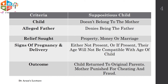The column on the left is regarding the criteria and the features of supposititious child on the right. First, the child does not belong to the mother. Regarding the alleged father, he denies the allegations. Third, the relief sought is where the child is used to claim property, money, or an illegal marriage with the alleged father. The signs of pregnancy and delivery are either not present, or if present, their age will not be compatible with the age of the child. When the allegations have been disproved, the child is returned to the original parents and the mother will be punished for cheating and fraud.